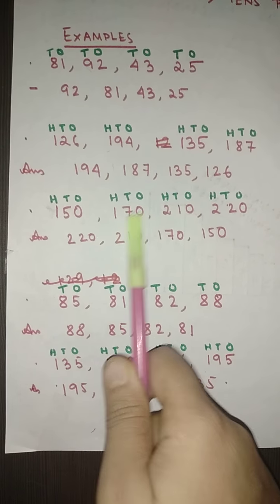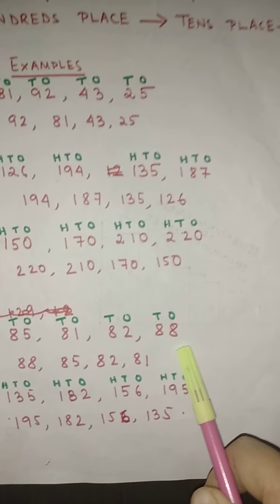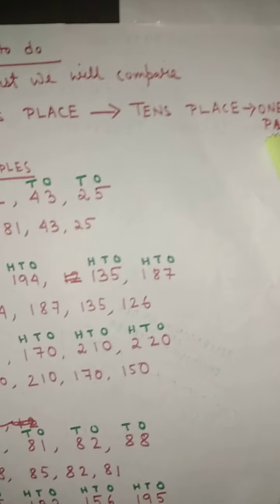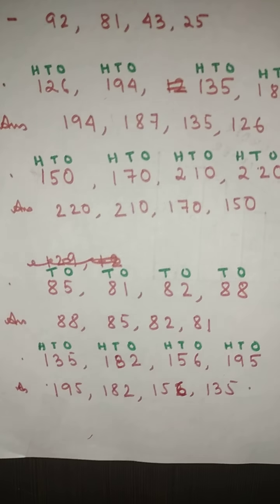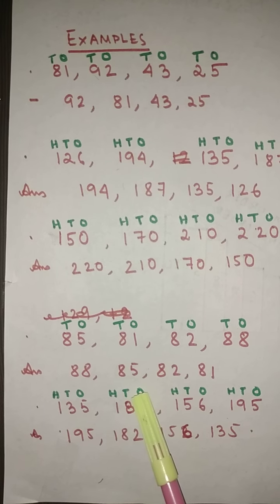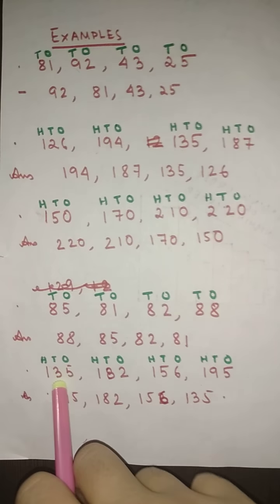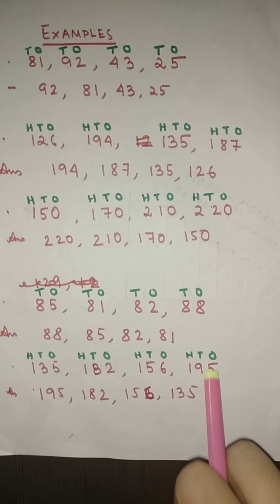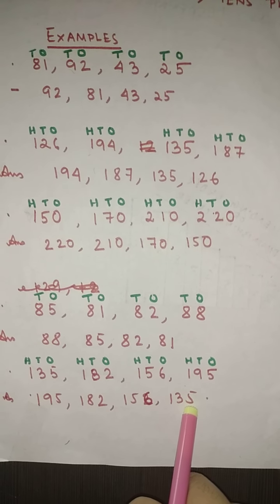The next set: 150, 170, 210 and 220. Here there is a mix — some numbers are in the one hundreds and two in the two hundreds. The digits in the hundreds place: two numbers have 2 and two have 1, so the 200s come first — 220 then 210 — and then 170 and then 150. Next: 85, 81, 82 and 88. The tens digits are all same, so compare the ones place: 88 first, then 85, then 82, then 81. Similarly for 135, 182, 156 and 195: hundreds are same, compare tens — 195, then 182, then 156, then 135.